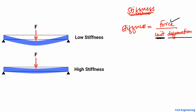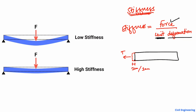For example, consider a steel bar or any kind of rod made of any material. If I apply a tension load T here, because of this tension the bar or rod will try to deform. When it shows a unit deformation — for example one centimeter, one millimeter, or one inch — that is one unit. The force required to produce this one unit deformation is known as the stiffness of the object.